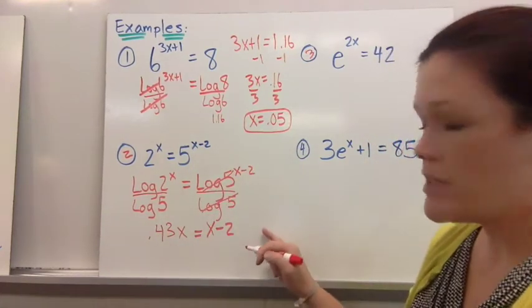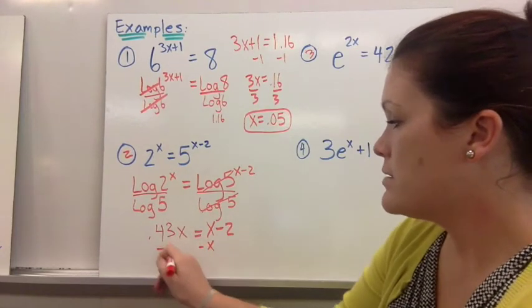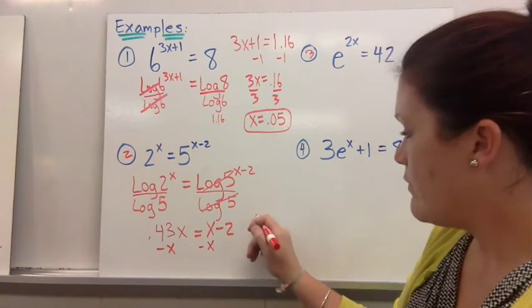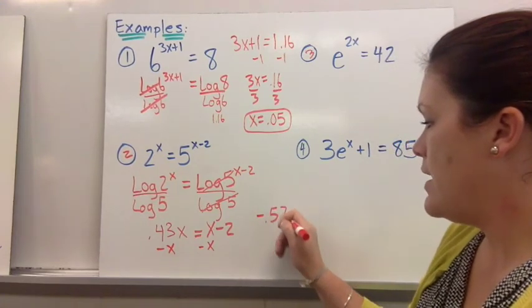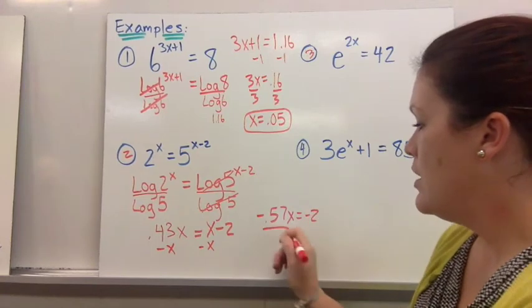And so now I have a linear equation to work on. So I am going to subtract x so I end up with negative 0.57x equals negative 2 and divide by negative 0.57 and I got x equals 3.51 for my solution.